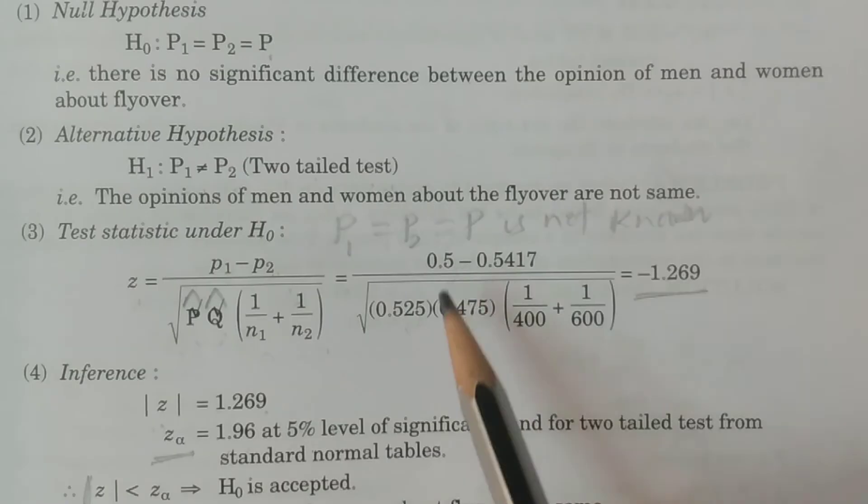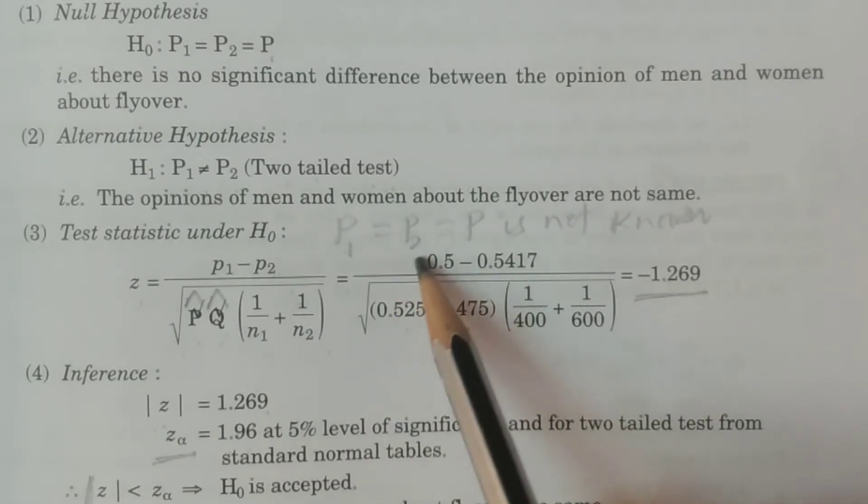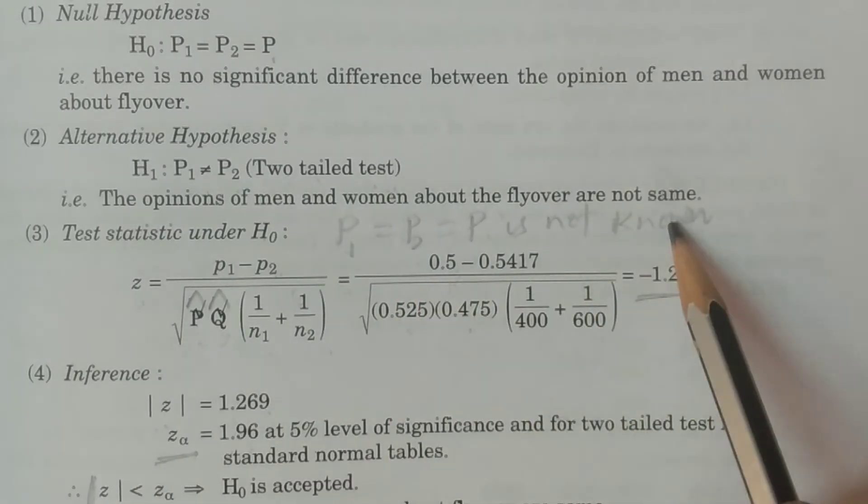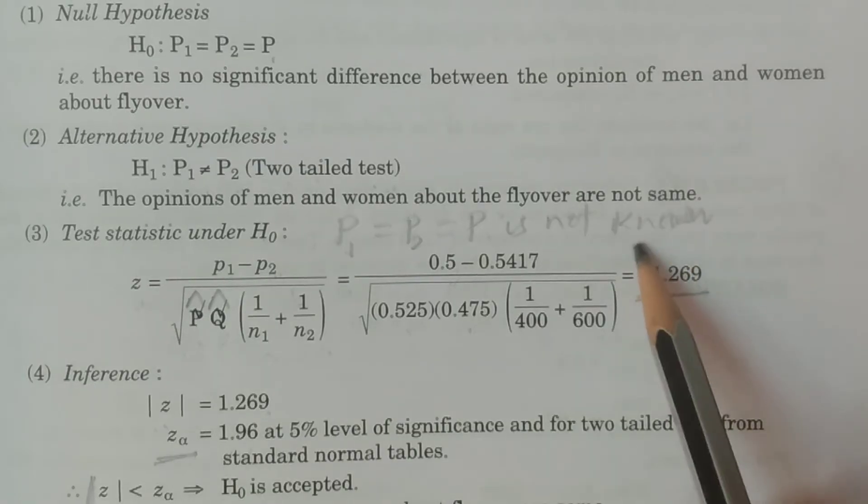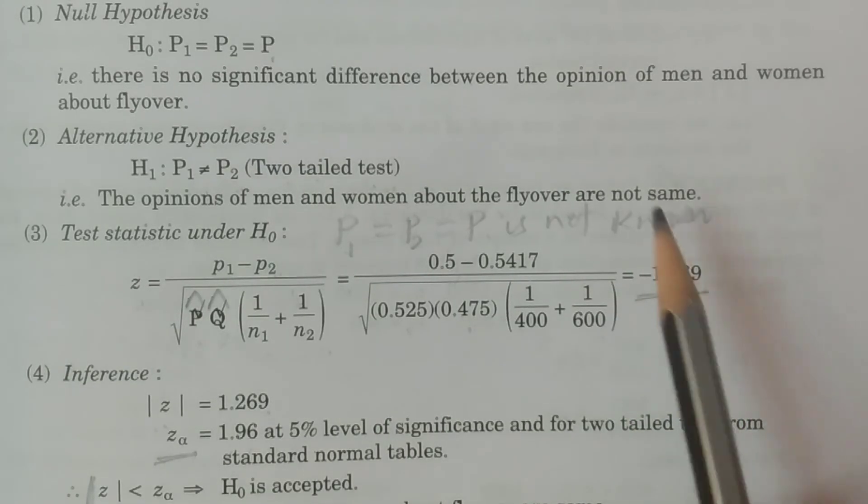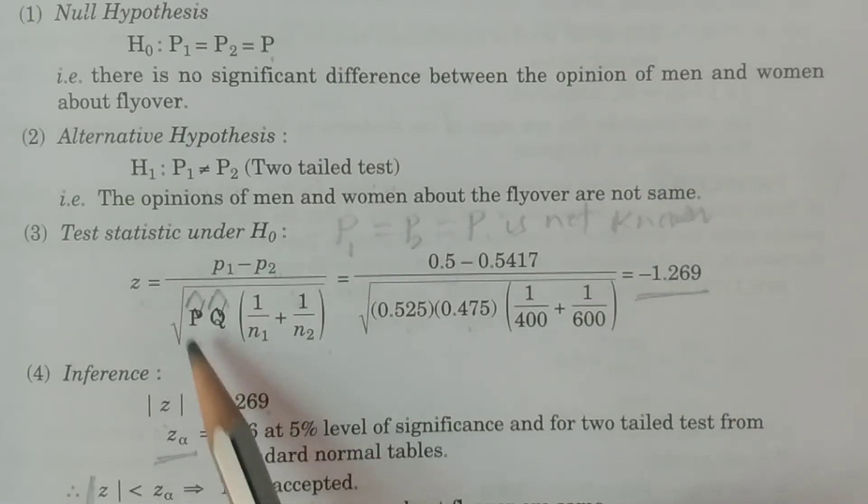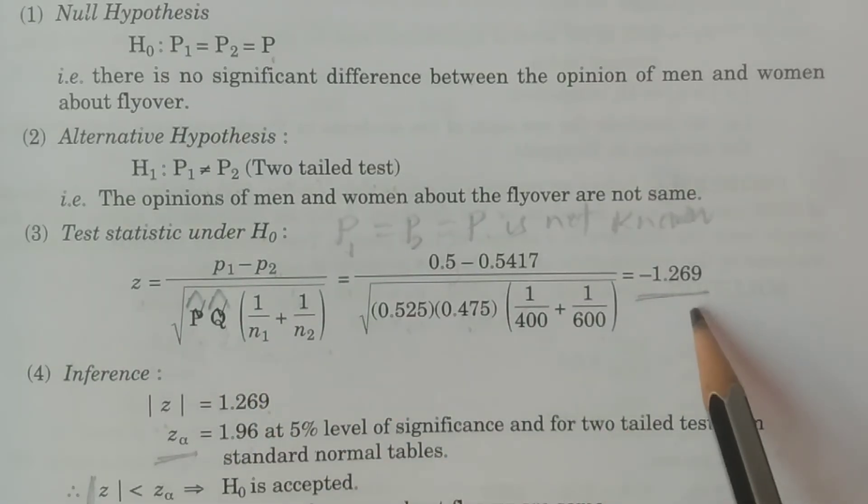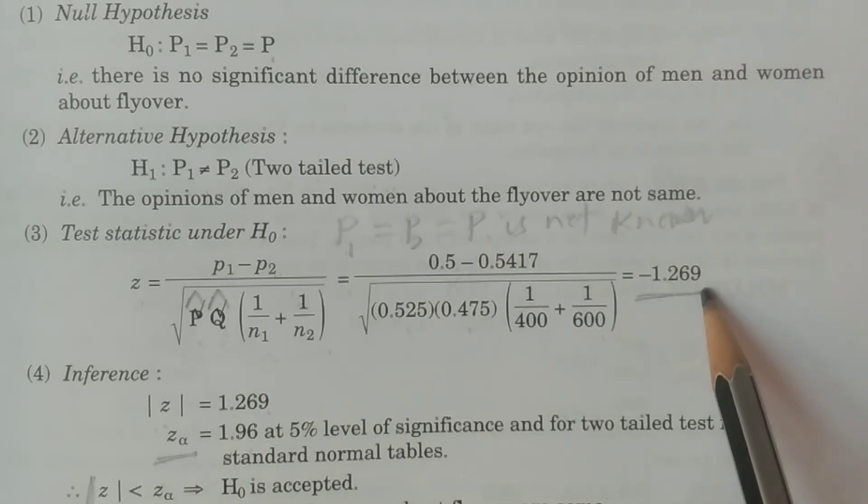This is a case where capital P1 equals capital P2 equals capital P, but P is not known. Capital P is not given, so it's the P not known case. In this case, the formula uses P cron and Q cron, which we calculated. This gives us the Z value.